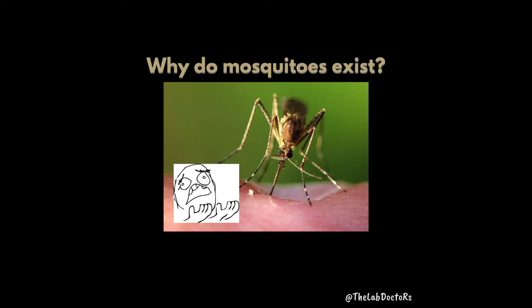Any other animals you can think of that are useless? I want to say oysters. They just produce pearls — that's all I know. Wait, don't they filter water as well? I think they all filter water because that's how they feed — they filter feed. They suck in everything in the water. Does that make the ocean cleaner? I don't know. They filter in sand and then compact it? Actually, if a grain of sand goes into them, they coat it to protect themselves — not to protect the environment. So it's accidental and then you get a pretty thing.